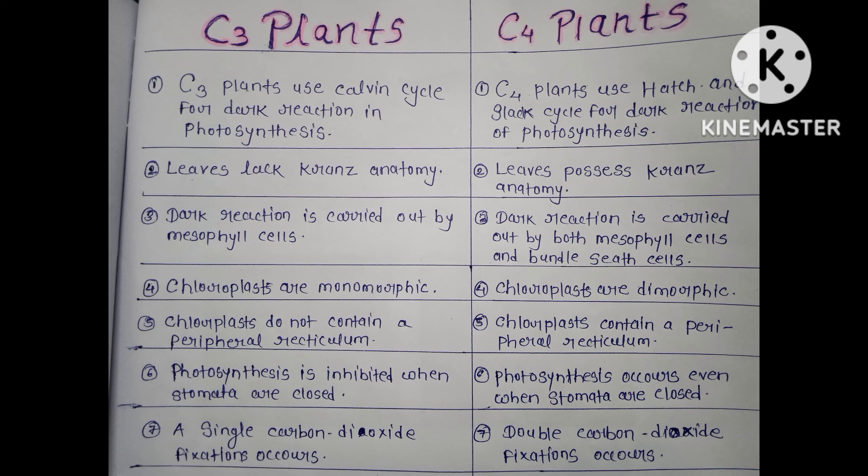Leaves of C3 plants lack Kranz anatomy, and leaves of C4 plants possess Kranz anatomy. In C3 plants, the dark reaction is carried out by mesophyll cells. In C4 plants, the dark reaction is carried out by both mesophyll and bundle sheath cells.